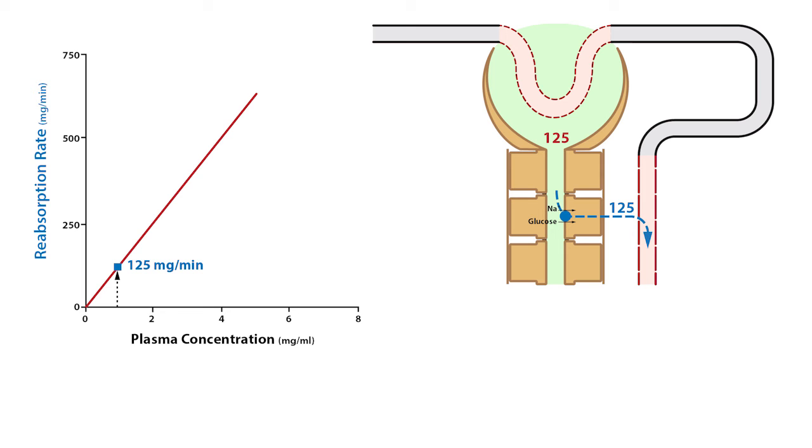As plasma glucose concentrations increase, the reabsorption rate will equal the filtered load until the sodium-glucose co-transporters become saturated, at which point the reabsorption rate reaches its maximum. This is referred to as the transport maximum and is denoted as TM.